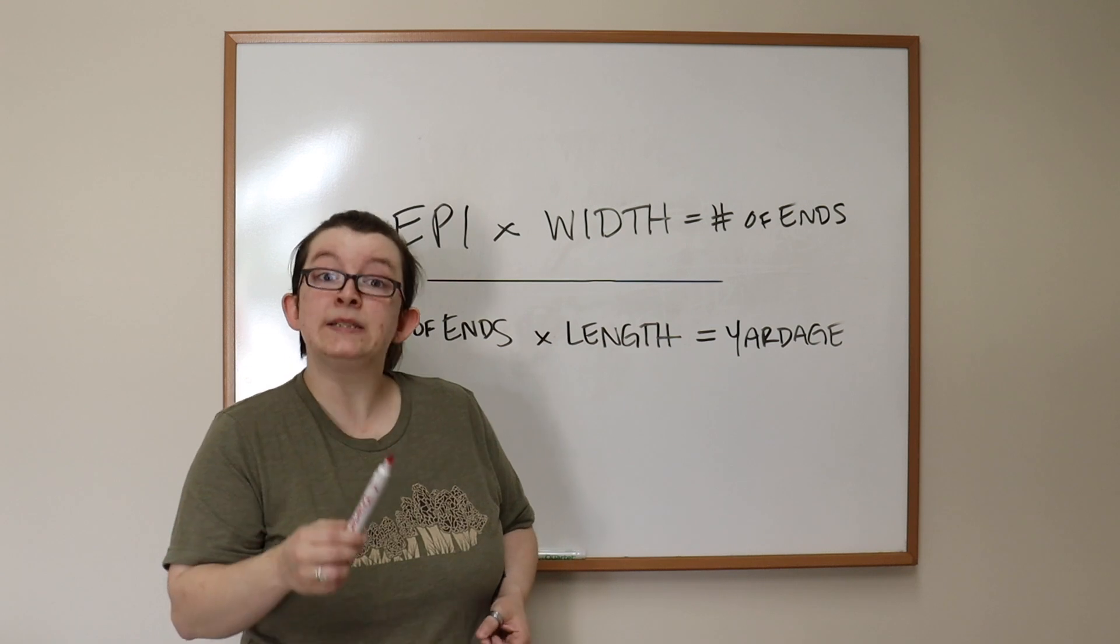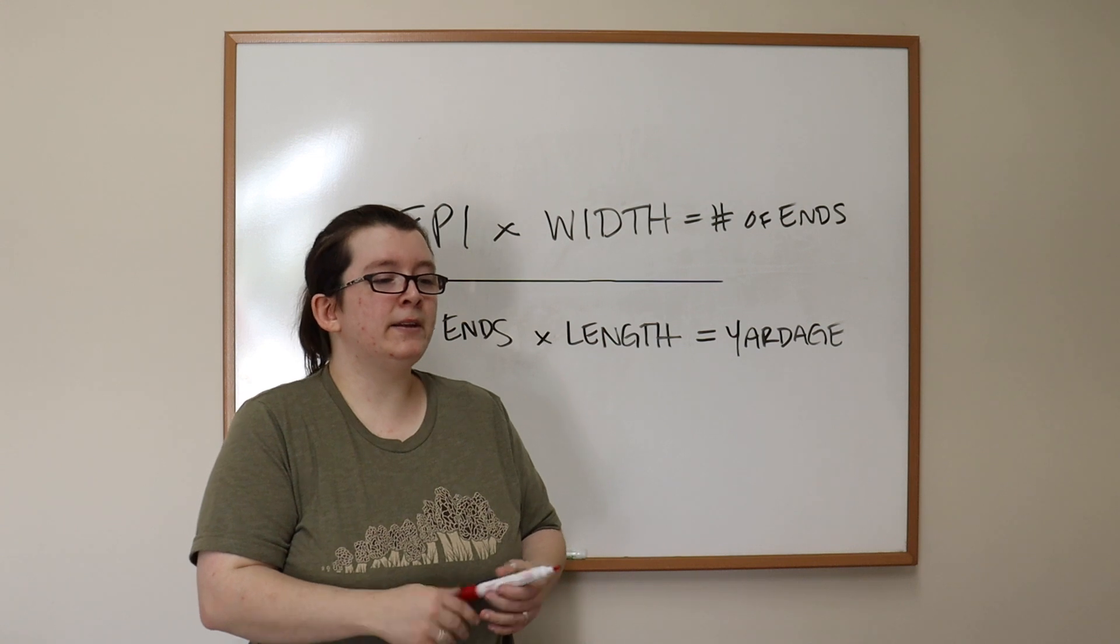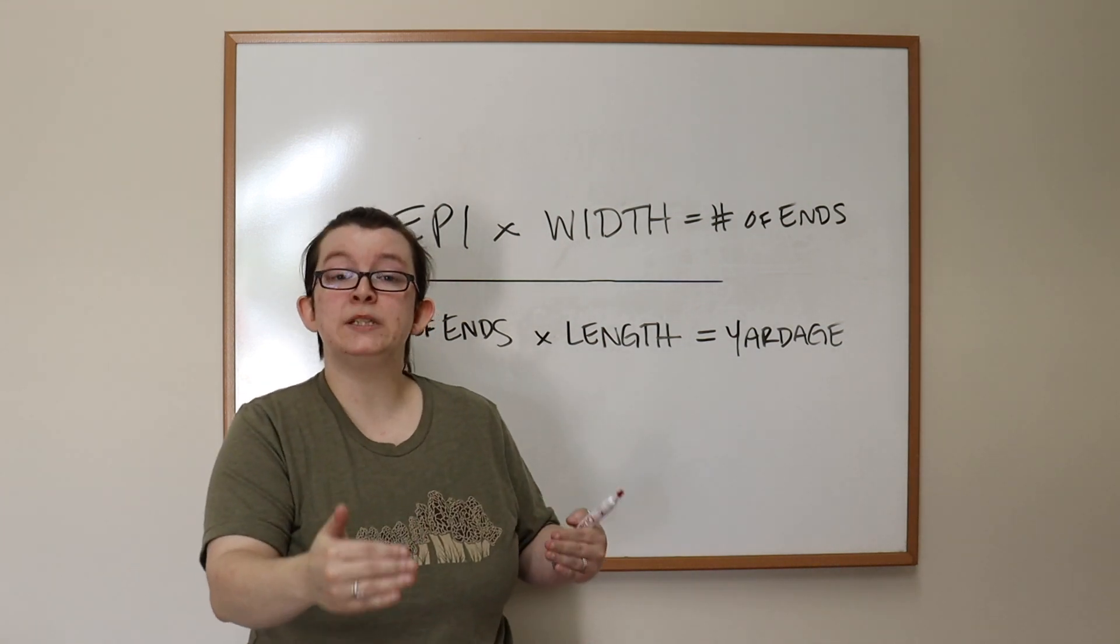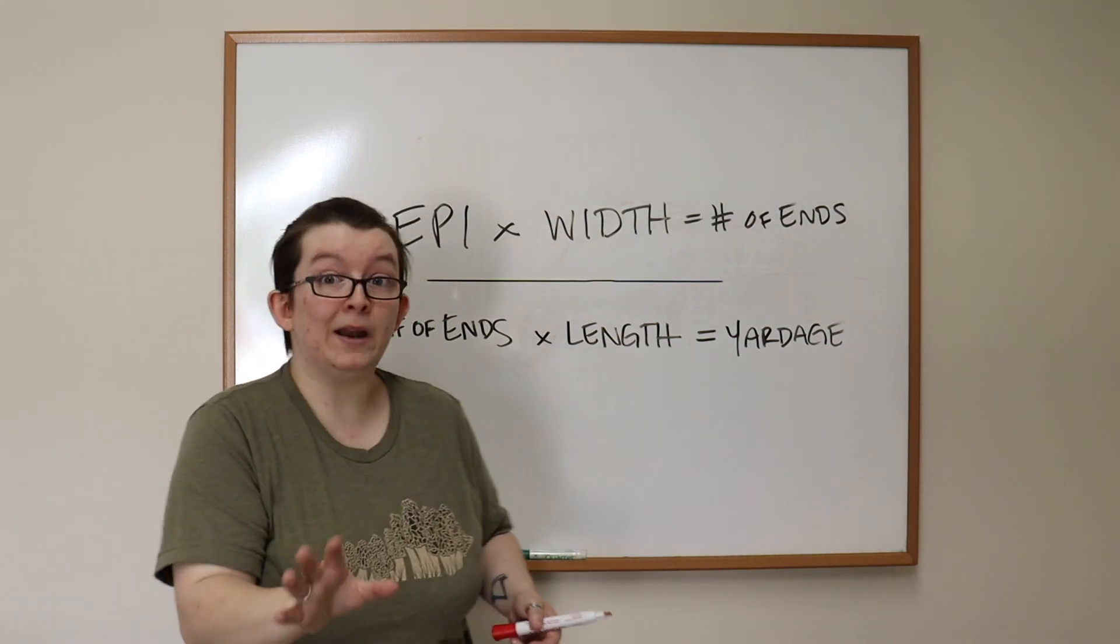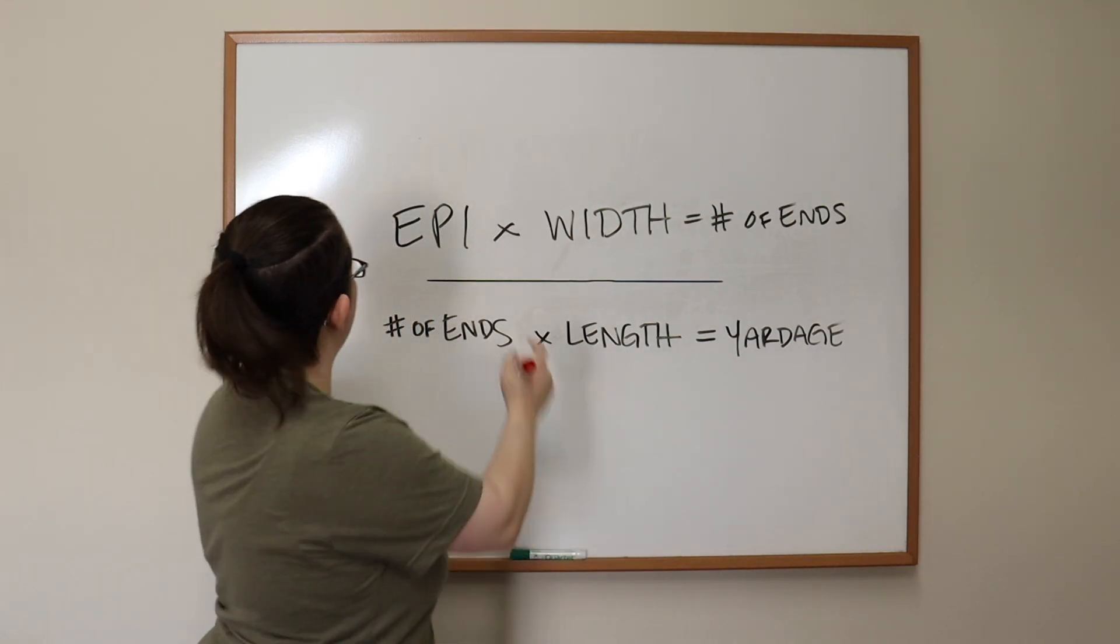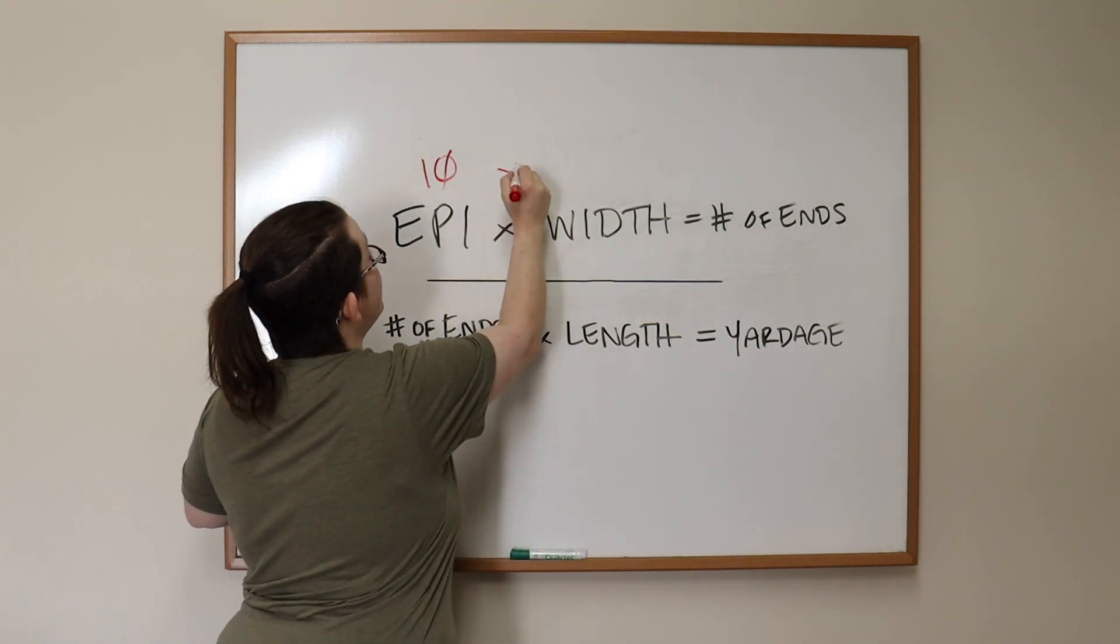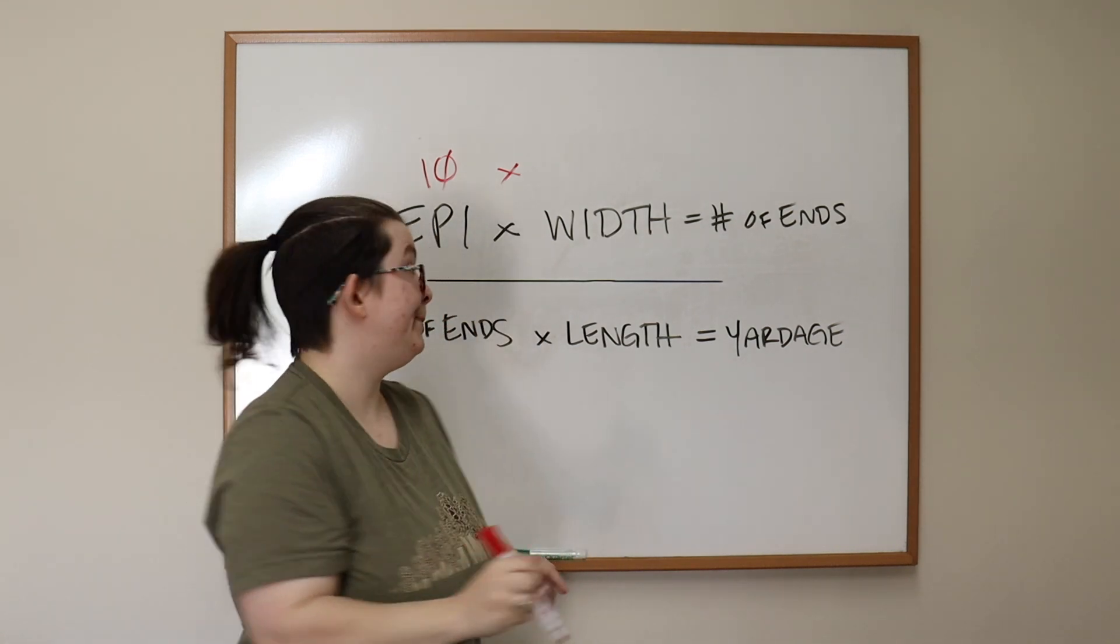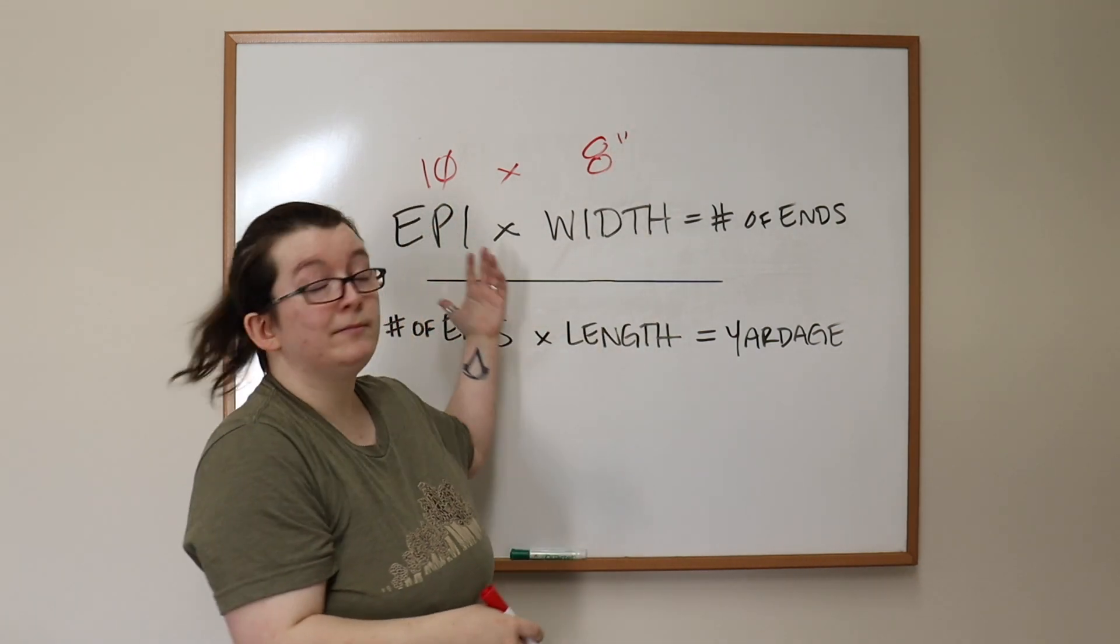Okay, so let's assume that I have a 10 dent reed, or a 10 dent rigid heddle. And let's also assume that I want my width on the loom to be 8 inches. What that shrinks to later, we're not worried about that right now. Right now, we just know that we have a 10 dent reed, so our EPI is 10. 10 EPI. We want it to be 8 inches wide. We can even do that. So here we go. 10 times 8.